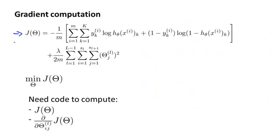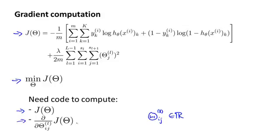Here's the cost function that we wrote down in the previous video. What we'd like to do is try to find parameters theta to try to minimize J of theta. In order to use either gradient descent or one of the advanced optimization algorithms, we need to write code that takes as input the parameters theta and computes J of theta and these partial derivative terms. Remember that the parameters of the neural network are theta superscript l, subscript ij — that's a real number. And so these are the partial derivative terms we need to compute.